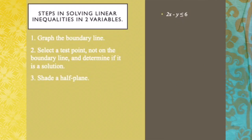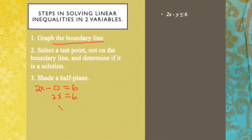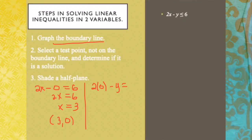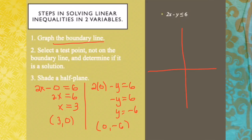Let's take another example: 2x minus y less than or equal to 6. The first step is the boundary line 2x minus y equals 6. Using intercepts: if y is 0, then 2x equals 6, so x is 3. If x is 0, then negative y equals 6, so y is negative 6. We graph points (3, 0) and (0, negative 6). Since the inequality is less than or equal to, we draw a solid line.